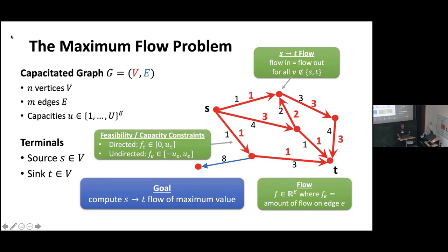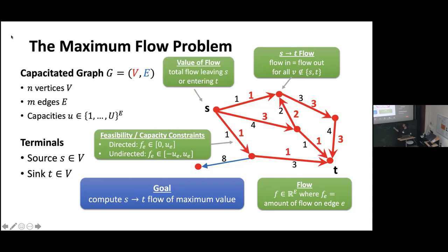We call something an ST flow if all the flow into a vertex equals the flow leaving that vertex for every vertex that's not S and T. An ST flow is feasible if, in the directed case, the flow on every edge is between zero and the capacity of the edge. In the undirected case, the flow on every edge is between minus the capacity and the capacity. Given a feasible ST flow, the value of the flow is the total amount of flow leaving S, and our goal is to compute a feasible ST flow of maximum value.